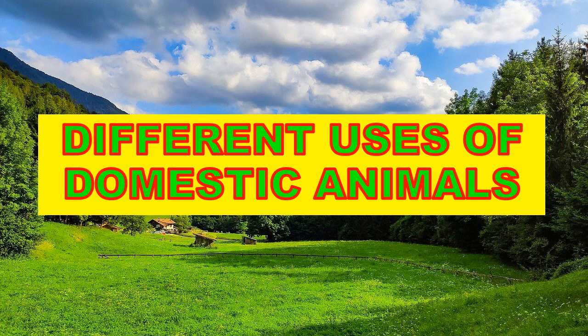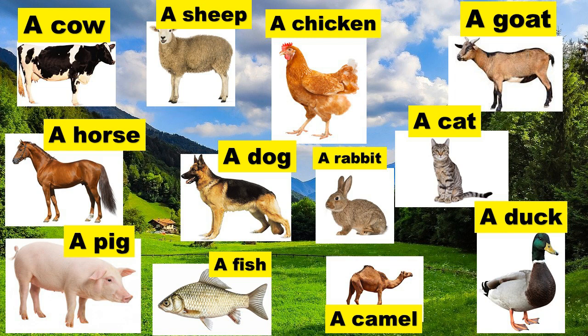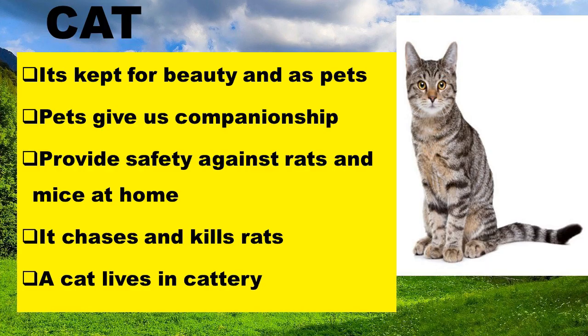Let's look at the different uses of domestic animals, starting from a cat. A cat is kept for beauty and as a pet. Pets give us companionship. A cat provides safety against rats and mice at home — it chases them and kills them. A cat lives in a cat tree.